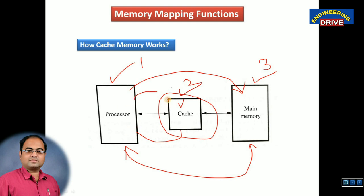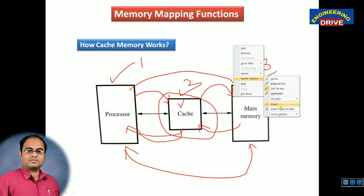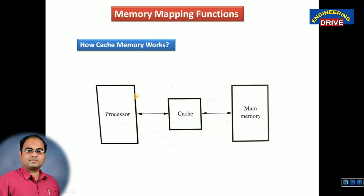Second question: if the processor searches the data in cache memory and the data is not found there, what happens? If the data is not found in cache memory, the next step is that data will be searched in main memory. Main memory gives the data back to cache memory, and then cache memory sends the data to the processor. So simply: processor first searches data in cache memory; if found, cache memory returns it to the processor; if not found, cache memory fetches it from main memory, then transfers it to the processor. The big advantage in speed comes when the required data is brought into cache memory itself.